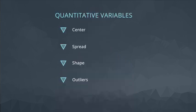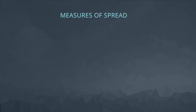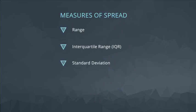We will begin this lesson looking at the second aspect with regard to analyzing quantitative variables: the spread. When we discuss measures of spread, we are considering numeric values that are associated with how far our points are from one another. Common values of spread include the range, the interquartile range, the standard deviation, and the variance.